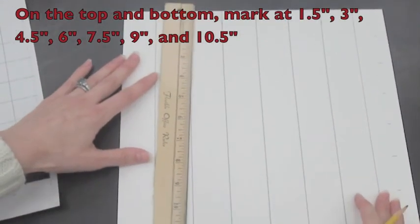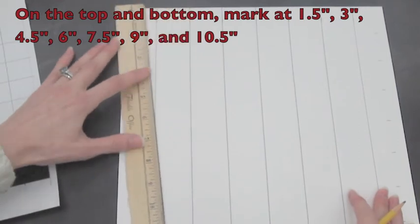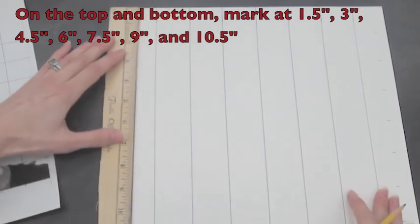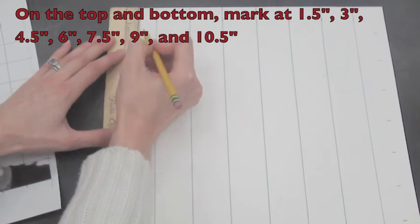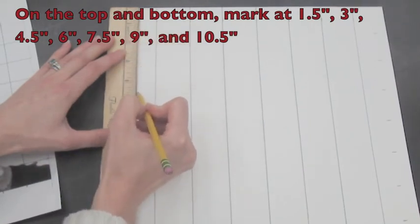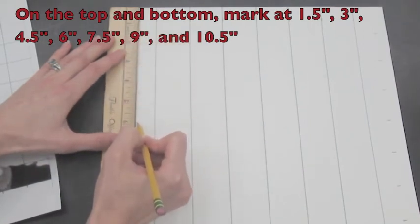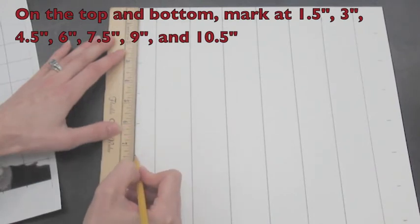Repeat on the opposite side of the paper. In this case, it's going to be my left now, since I've turned the paper so many times. Mark at 1 and a half, 3, 4 and a half, 6, 7 and a half, 9, and 10 and a half inches.